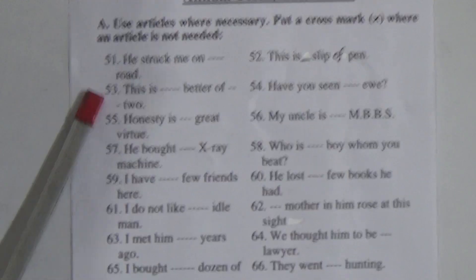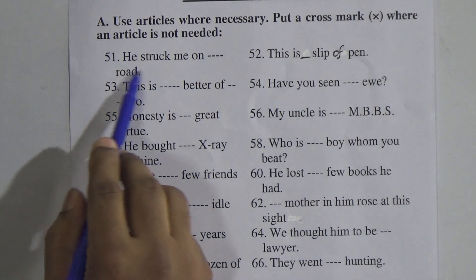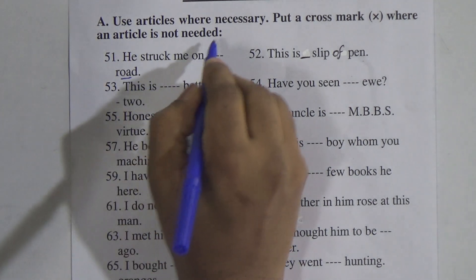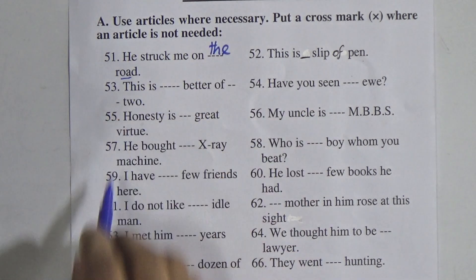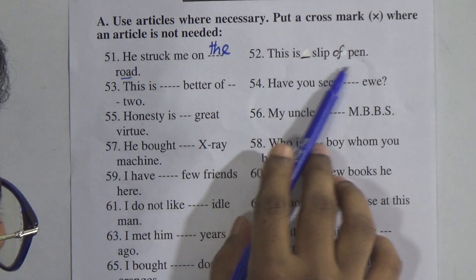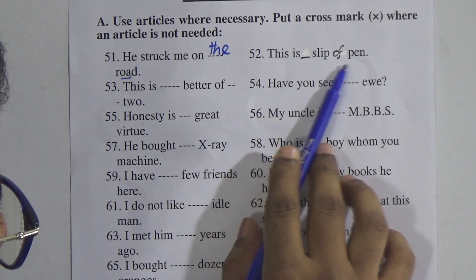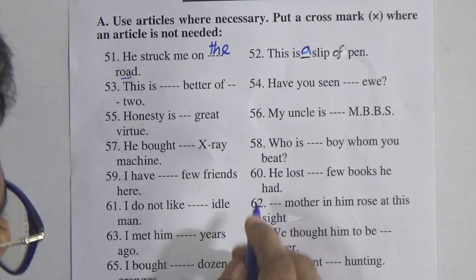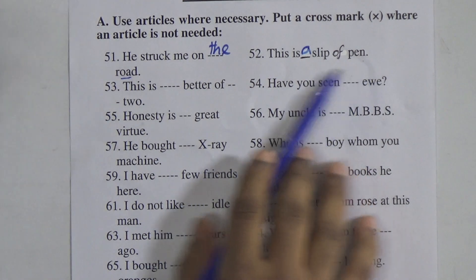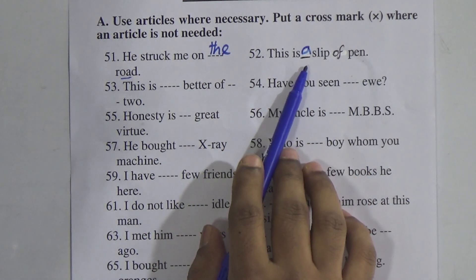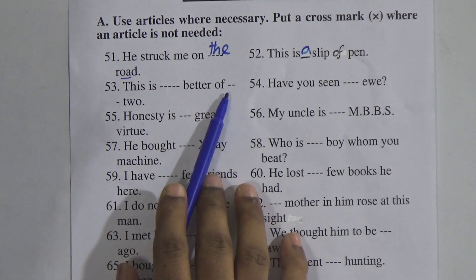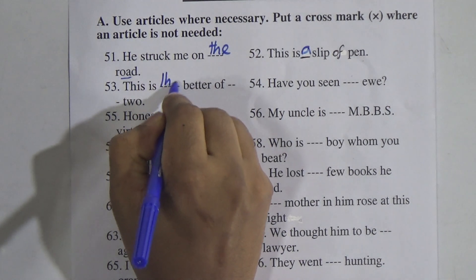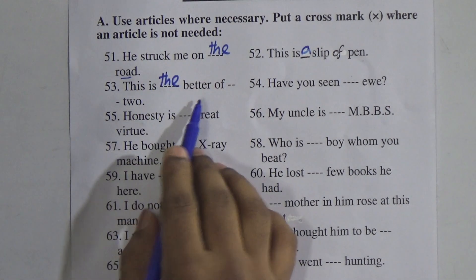Number 51: 'He struck me one — wrote.' The answer is 'a' — 'He struck me a wrote.' Number 52: 'This is — sleeve of a pen.' We don't know what kind of pen it is, so it's indefinite — 'This is a sleeve of a pen.' Number 53: 'This is — better of — two.' Both are definite here — 'This is the better of the two.'